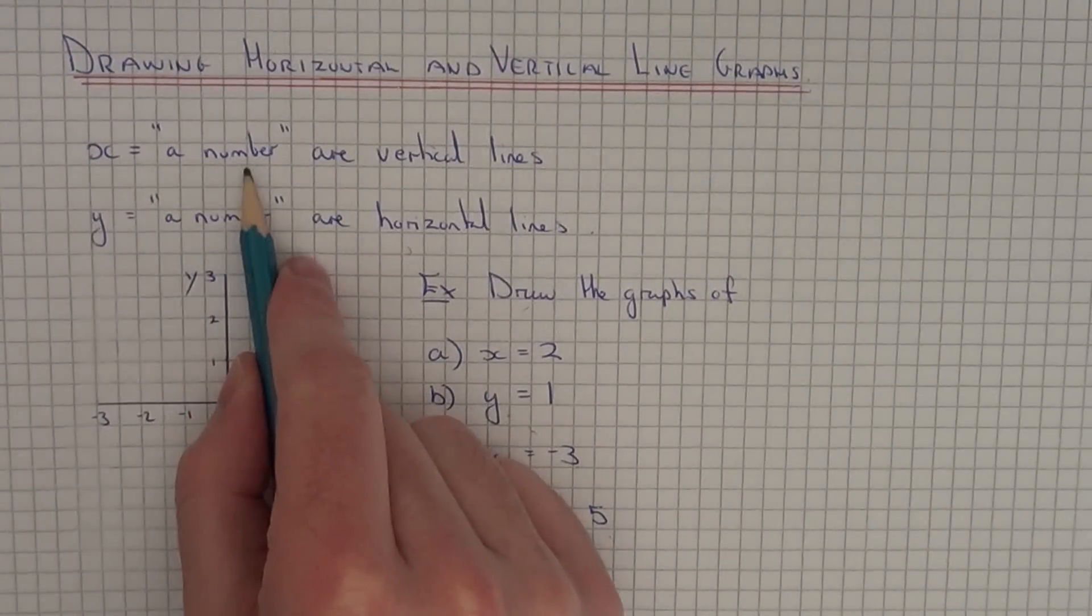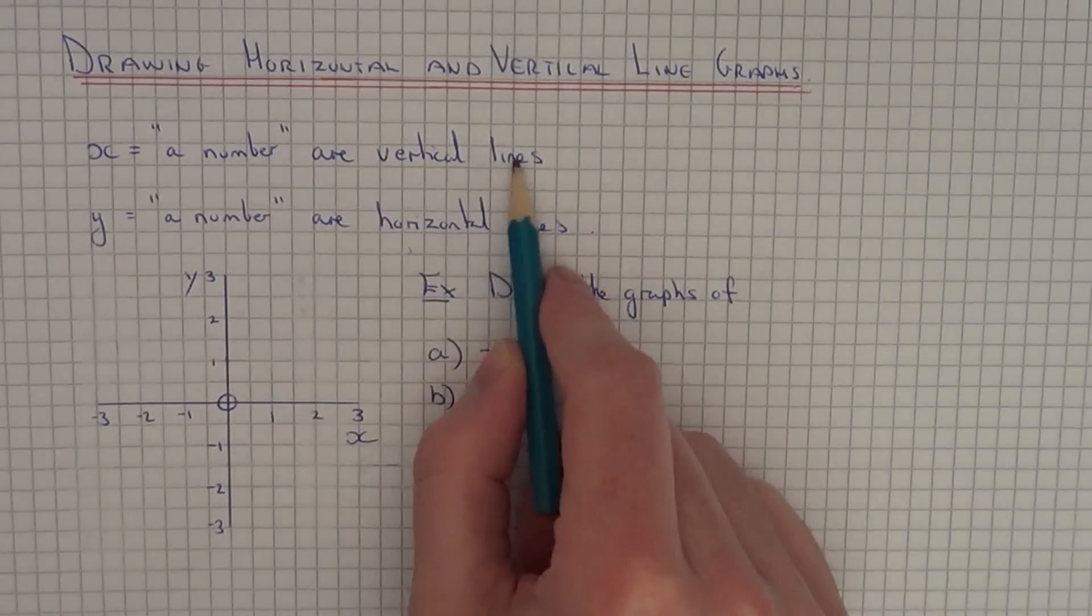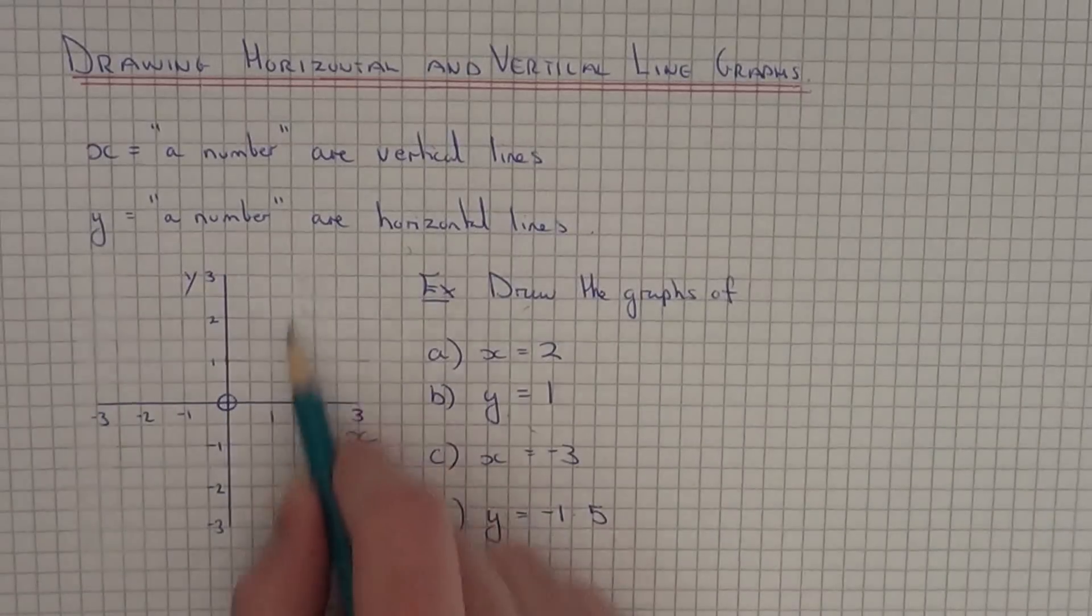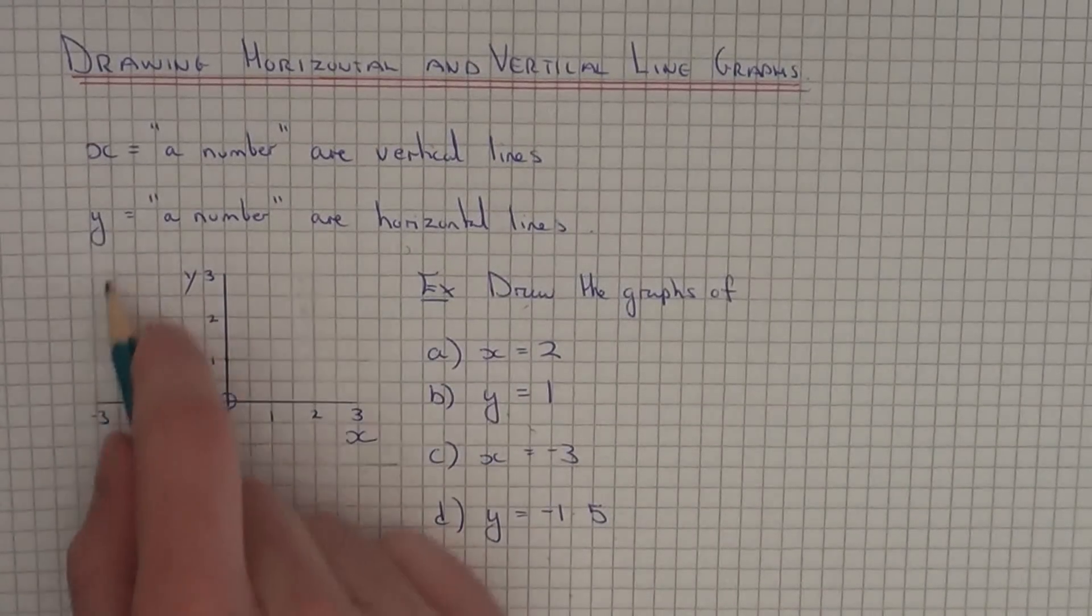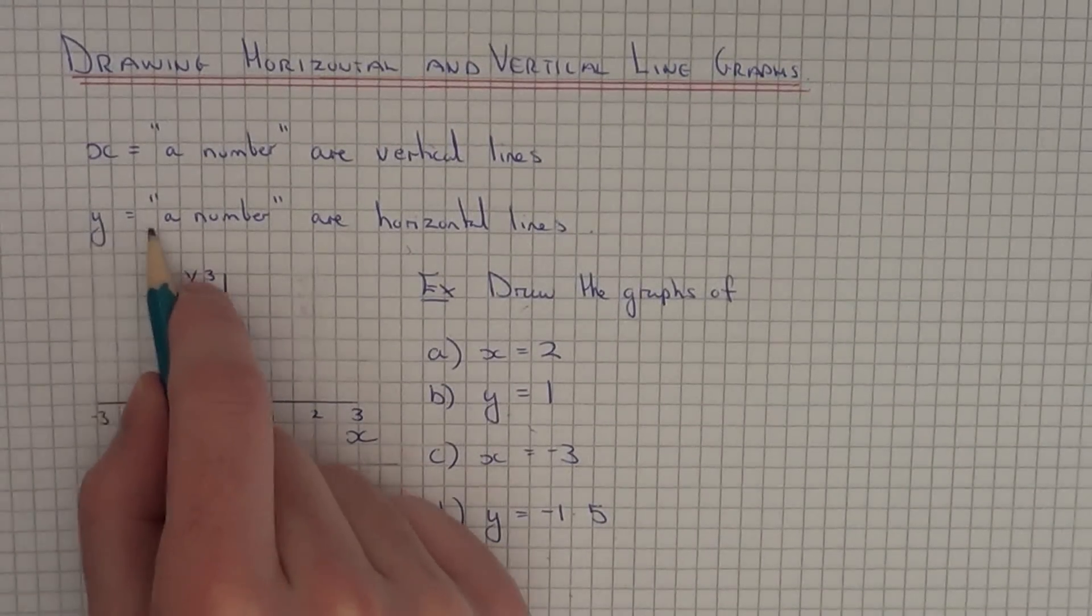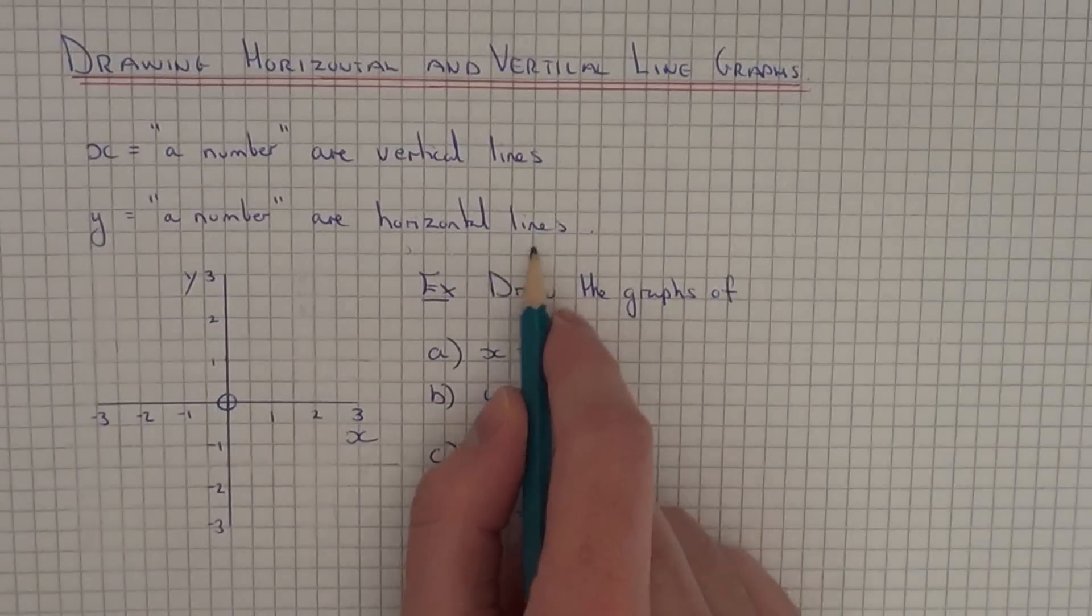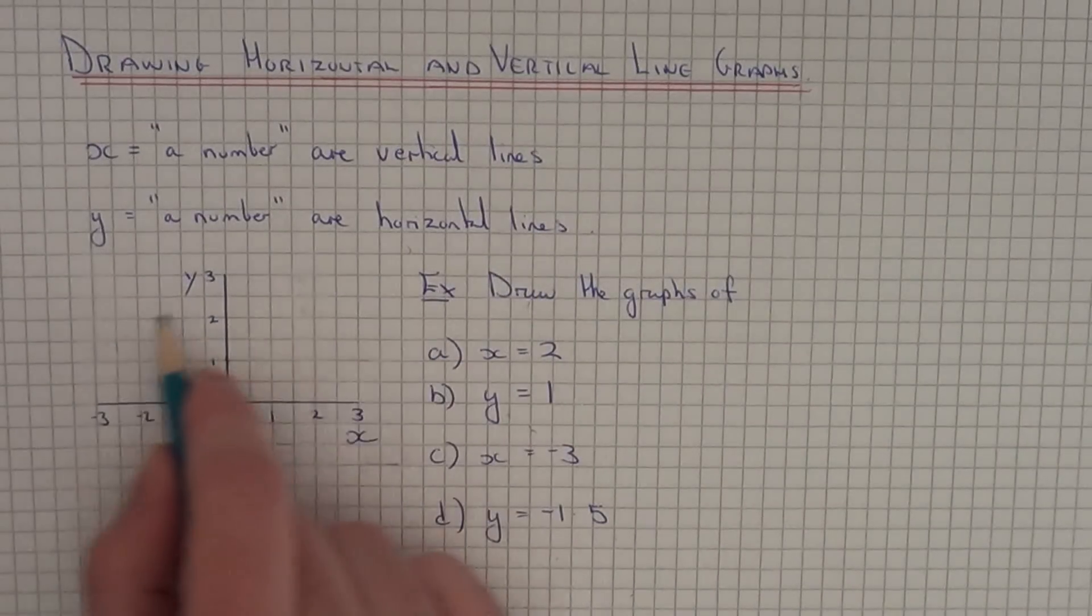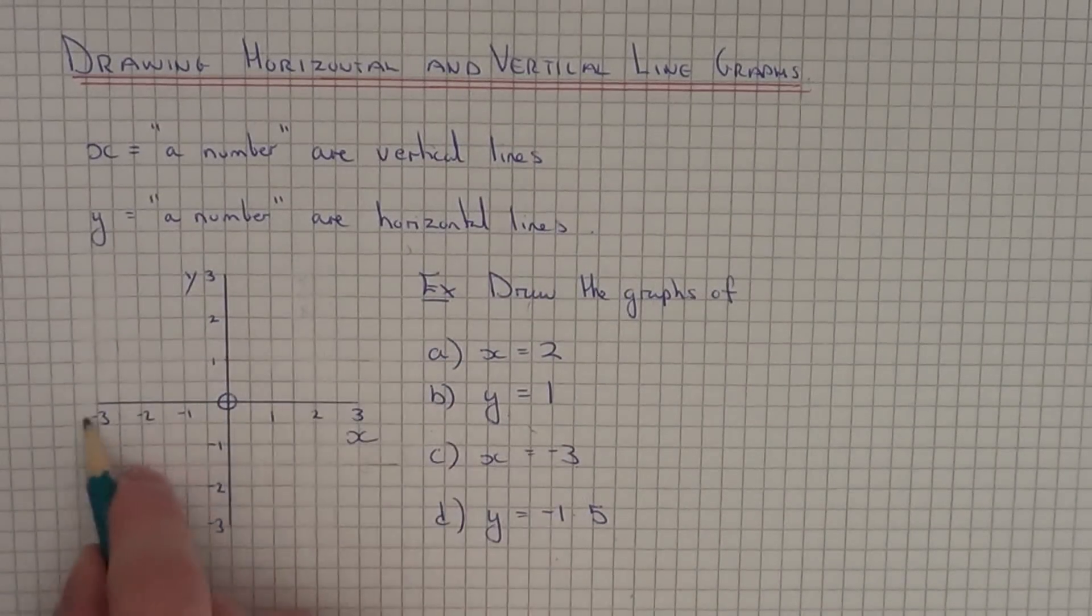Lines which take the form x equals a number are vertical lines, so these lines cut through the x-axis. And lines which take the form y equals a number are horizontal lines, these lines cut through the y-axis.